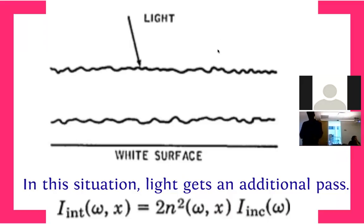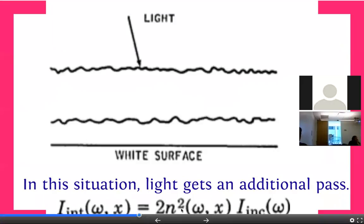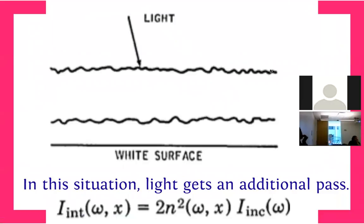Another thing one can do — as we saw in the high-efficiency solar cell — is place a reflector at the bottom. Light comes in, bounces around, gets randomized, but some light escapes by refraction. Whatever escapes can essentially be reflected back into the system by a mirror at the bottom. If you can do that very efficiently, you allow the light to pass through twice, giving an additional factor of two. So it's not just n² anymore — it's 2n². The intensity inside is 2n² times the intensity outside.